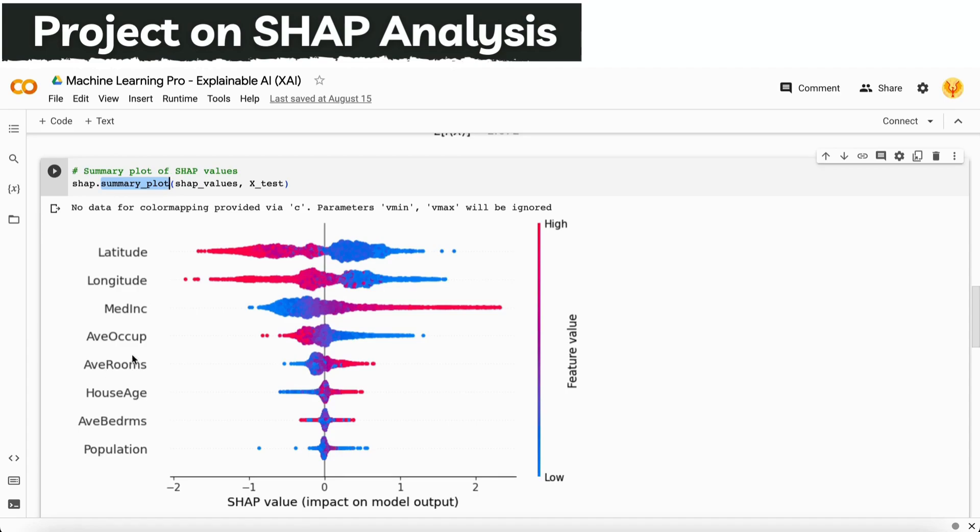Similarly we see the average rooms and average occupancy. Average occupancy shows that if low values are there, the house price also will be high. Similarly the longitude values, if it's going to be in a very low phase, then the price of the house will also be in a high phase as well.